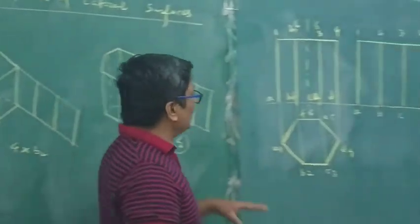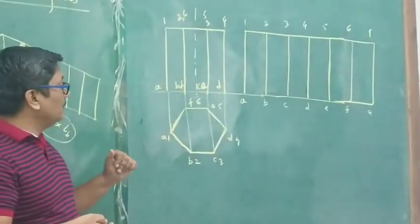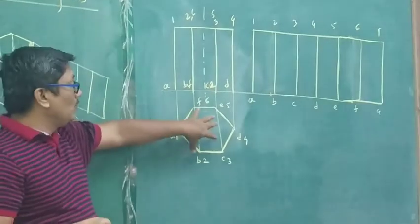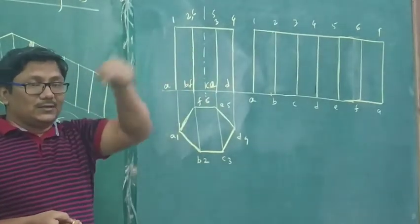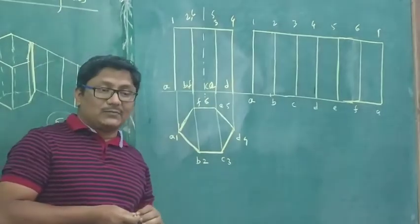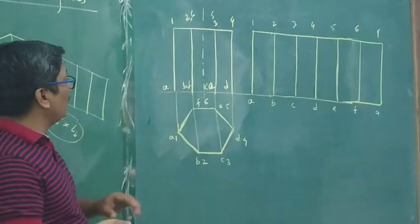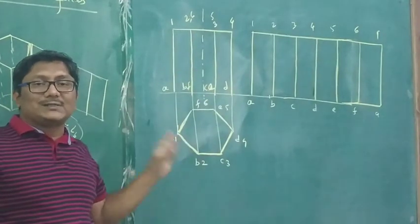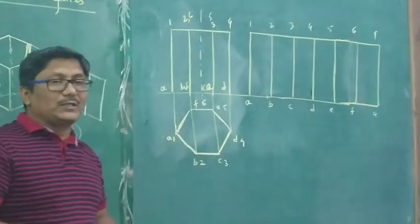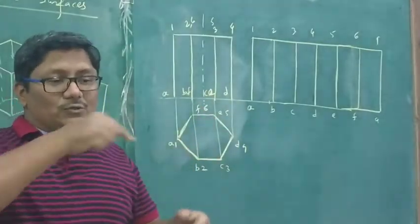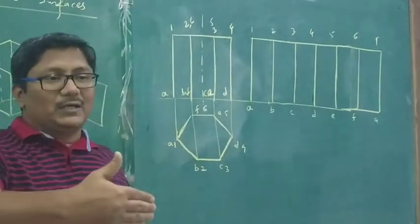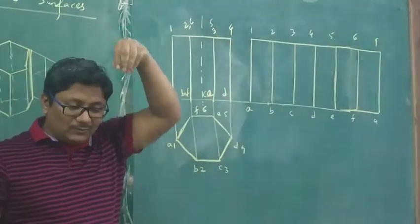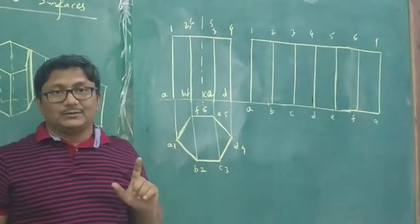Now we will take one project: development of the hexagonal prism. Orthographics is very important. This is the first angle projection method where the top view is a hexagonal surface. The front view is drawn above the XY line and the top view is drawn below the XY line. The hexagonal prism is kept in front of you, and while looking from the top side, you will see the hexagon.